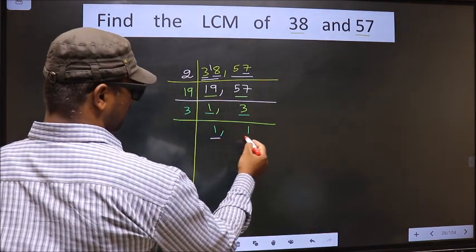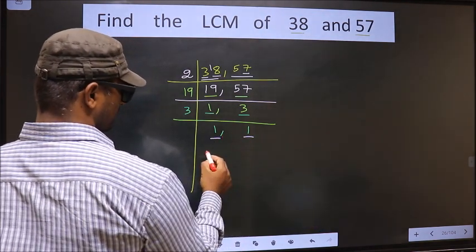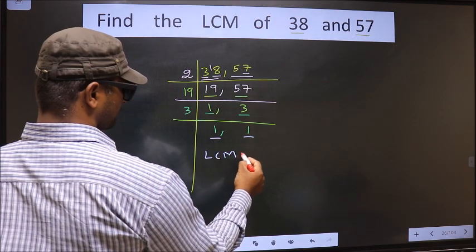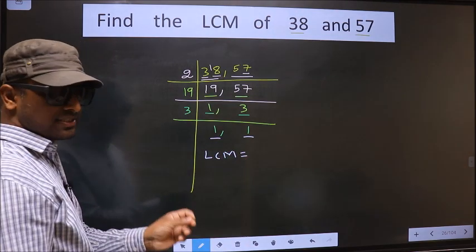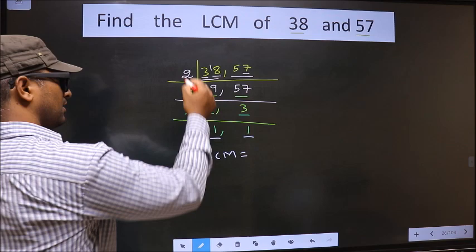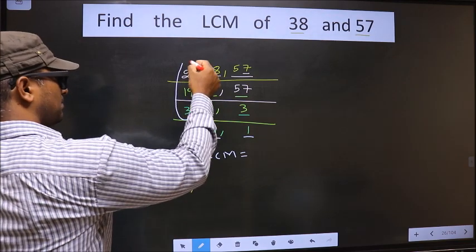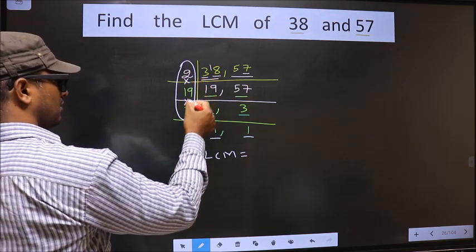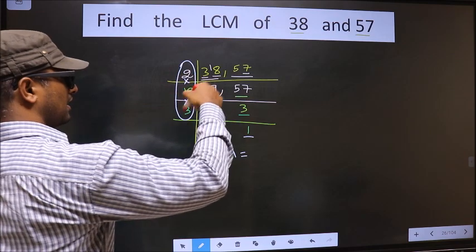We got 1 in both places, so our LCM is the product of these numbers. Product of these numbers.